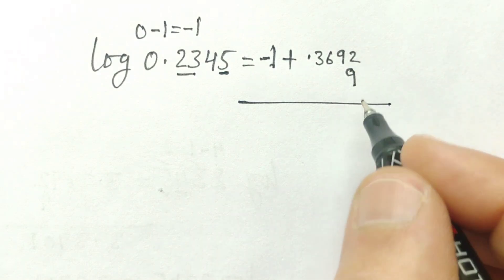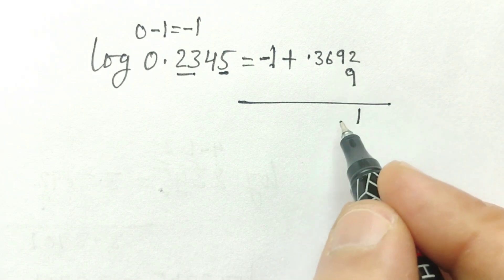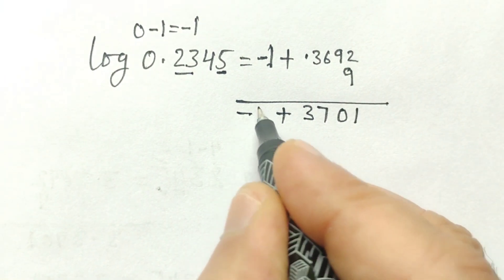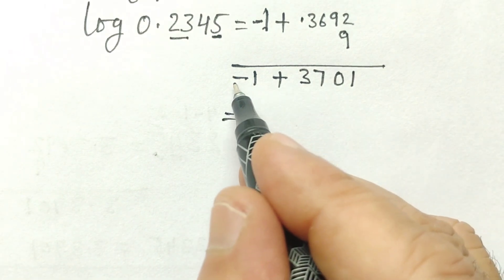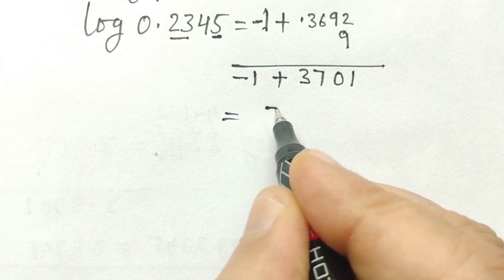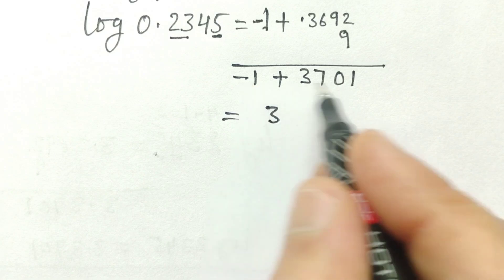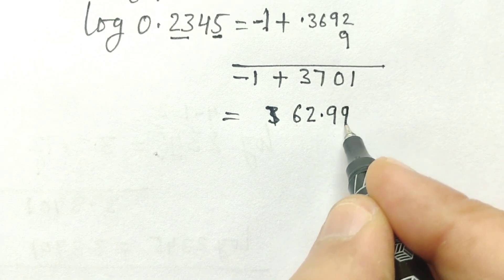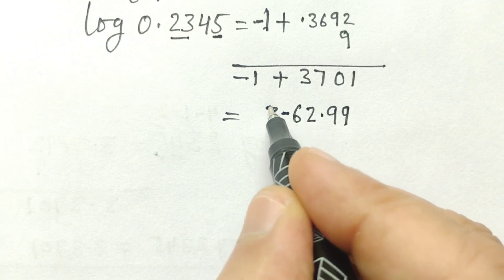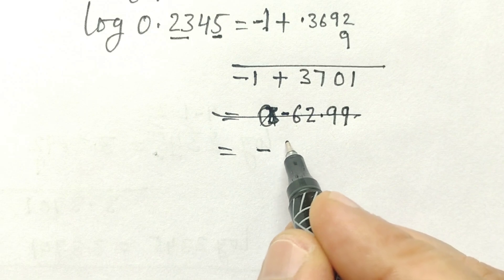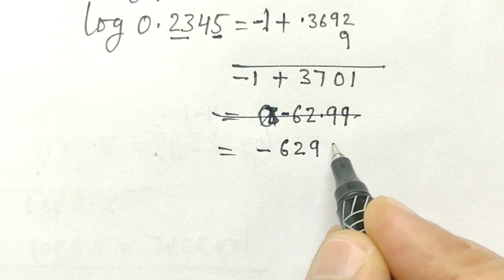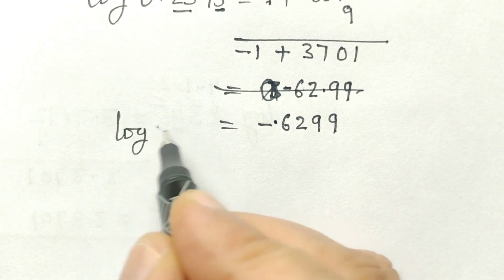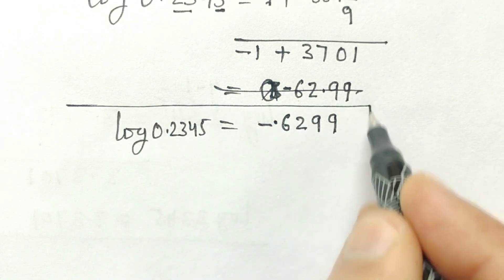So here, 9 plus 2 is 11, and 9 plus 1 is 10. Then 7, 3. The sign will be minus. So combining, this plus this will be 3699 — I am extremely sorry — minus 6299. With the decimal point placed, so log of 0.2345 will be this.